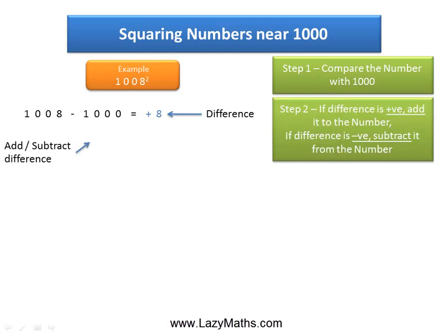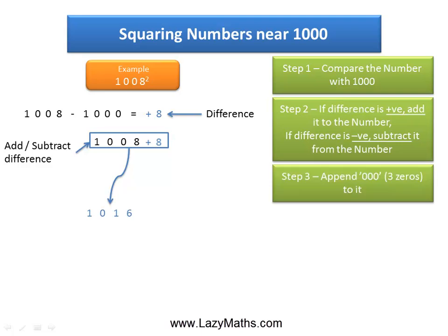The next step is to add that 8 with 1008, so we get 1008 plus 8 equals 1016. Then the third step is to append 3 zeros — the 3 zeros of 1000 — to 1016 to get 1,016,000.